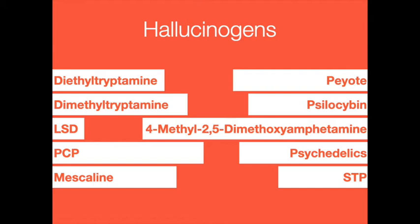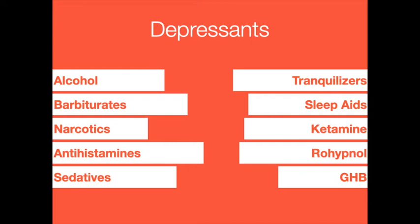Hallucinogens, also known as psychedelics, are substances that cause changes in mood, sensation, thought, emotion, and self-awareness. They alter one's perception of time and space and produce visual, auditory, and tactile delusions. Among the most widely abused hallucinogens are lysergic acid diethylamide (LSD, called acid), psilocybin (called mushrooms), phencyclidine (PCP, called angel dust), and mescaline (called peyote buttons). These are usually ingested, though PCP is also often inhaled. Hallucinogens sometimes cause a 'bad trip,' involving intense fear, panic, paranoid delusions, vivid hallucinations, profound depression, tension, and anxiety; the patient may be irrational and feel threatened by any attempt to help.